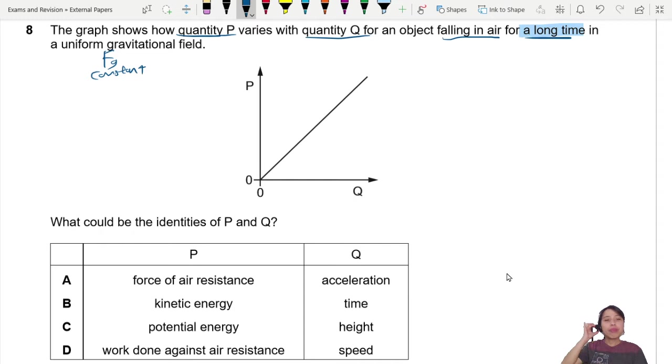So the first one, force of air resistance against acceleration. Now, when you see a straight line graph like this, it means that P is proportional to Q. So can we think of air resistance, let's call this force of air resistance, drag force Fd, and acceleration A. How do those two relate? Can we think of a way where they relate?